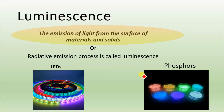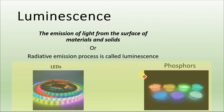In the process of luminescence, electrons from the conduction band and holes from the valence band recombine. During this recombination process, photons are emitted — this is the radiative emission process. The simplest examples of luminescence are LEDs and phosphors.